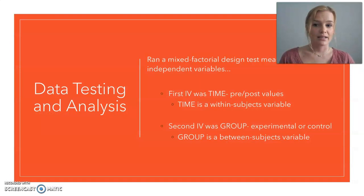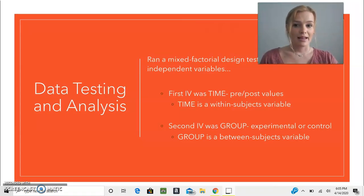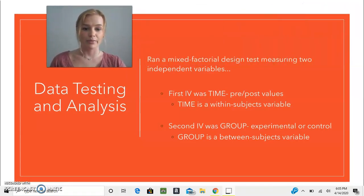So my data testing and analysis was completed through a mixed factorial design test measuring two independent variables. My first independent variable was time, and that was measured through pre and post values. Time is a within-subjects variable because it measured the same participant scores twice with pre and post.